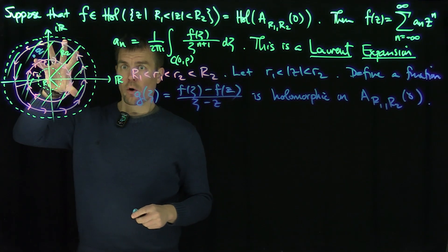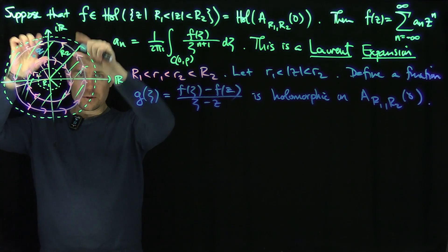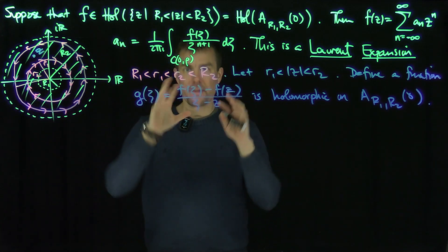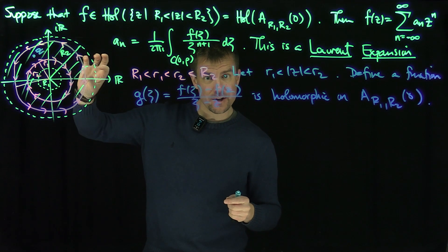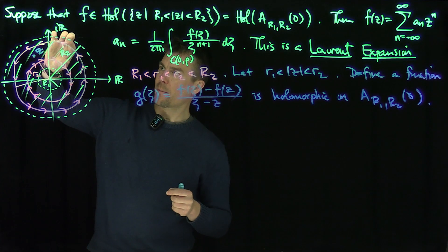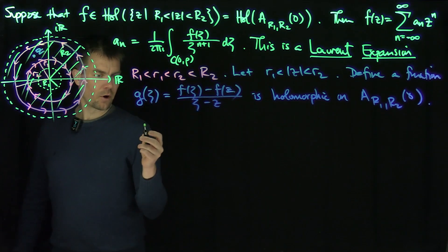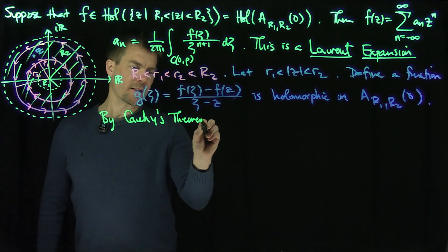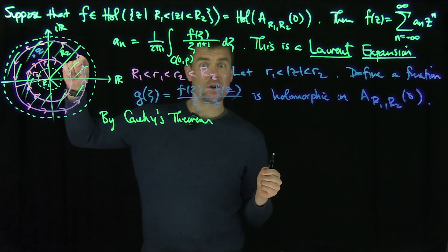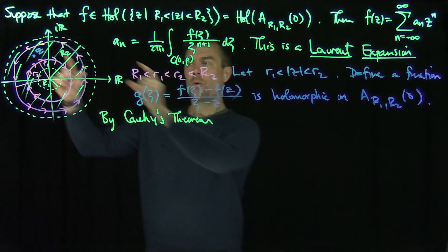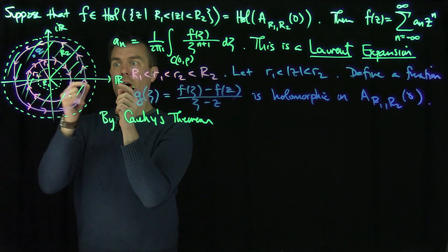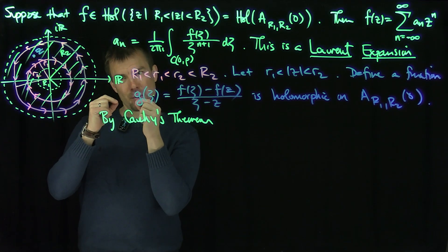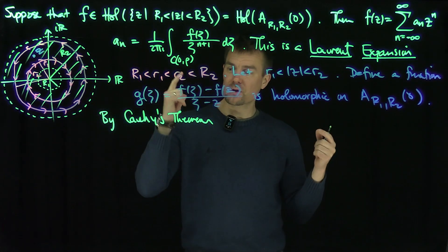Now I can use Cauchy's theorem, because these two curves are homotopic — I can continuously deform the circle of radius r2 into the circle of radius r1, and the smooth homotopy is clear: just use ρe^{iθ} where ρ varies between r1 and r2, which is linear and hence smooth. With opposite orientations, they form a zero cycle, and by the homotopic version of Cauchy's theorem the integrals are equal.